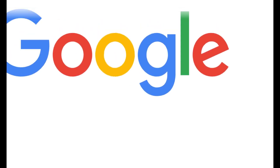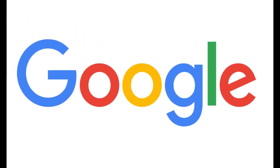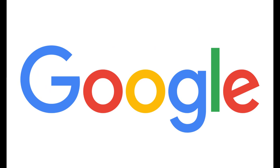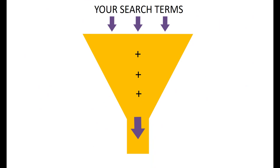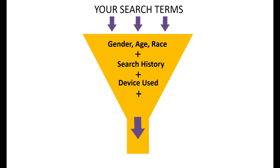Let's talk about where search results come from. Google uses algorithms to anticipate what I want to see in my search results. Algorithms — the instructions computer systems use to solve problems and complete tasks — alter the search results I see based on my profile data, like my gender, age, and race, my search history, the device I'm using, and my geographic location.